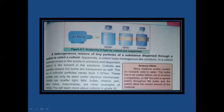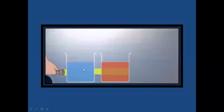Colloids can be opaque or transparent. Their particle size ranges from 1 to 1000 nanometers and can be seen only under an electron microscope. Examples of colloids include milk, butter, cheese, jam, halwa, jellies, and mayonnaise. Some antibiotic syrups are suspensions — you can see the medicine settled at the bottom, which is why bottles are labeled 'shake well before use.' Solutions do not scatter light; light just passes through them, but colloids and suspensions scatter light, making the light pathway visible.